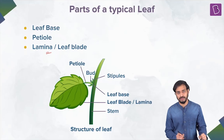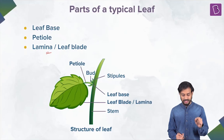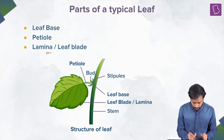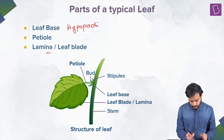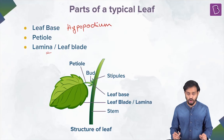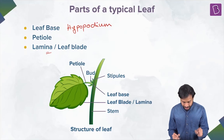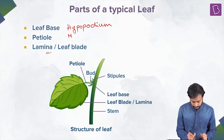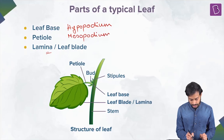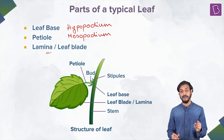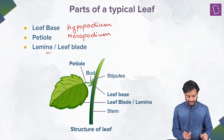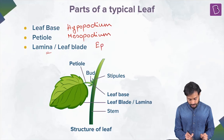Now let me give you some terminologies. The leaf base is also known as the hypopodium. This base is also called the hypopodium. The petiole is also called the mesopodium. And the lamina is also called the epipodium.